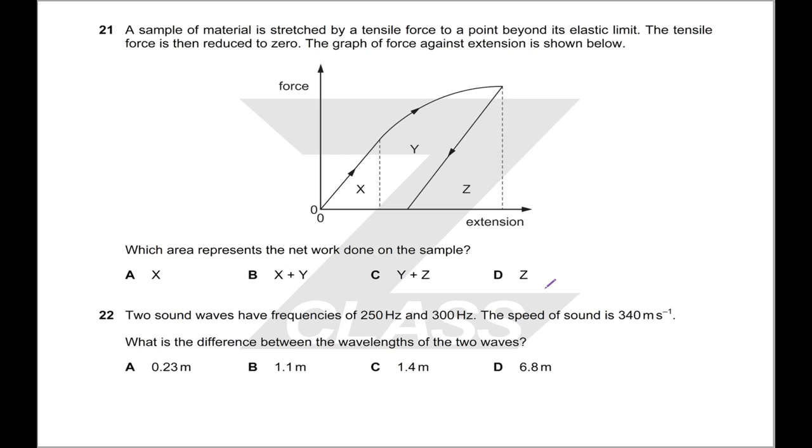A sample of material is stretched by a tensile force and inelastically expanded. Which area represents the net work done on the sample? So the net work done is the area inside the curve. You can think about this two ways. Either you can know that it's x plus y, or you can think about it as well, your work done on extending it was this total area which is x plus y plus z. The work that you regained when it contracted was the area under force extension again, but this time that's just z. So you've got x plus y plus z minus z which is x plus y. Or you can just know that it's the region inside.